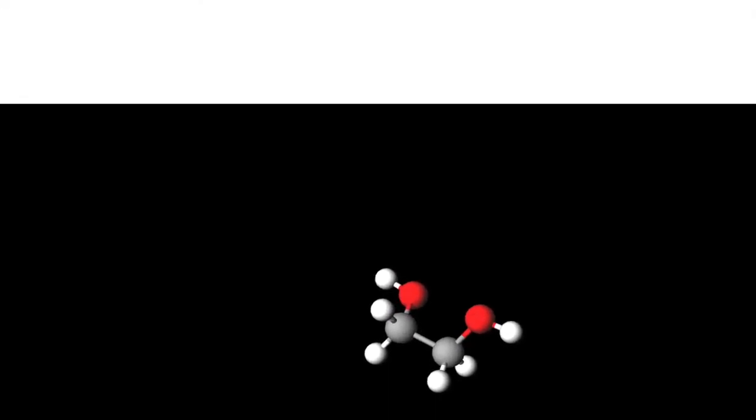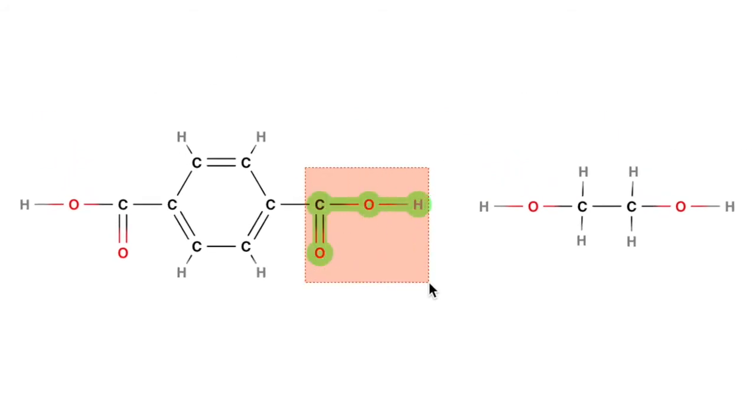As you can see, terephthalic acid has two carboxyl functional groups at each end of the molecule and ethylene glycol has two hydroxyl functional groups at each end. It is these two functional groups that react together to create an ester link between the molecules.